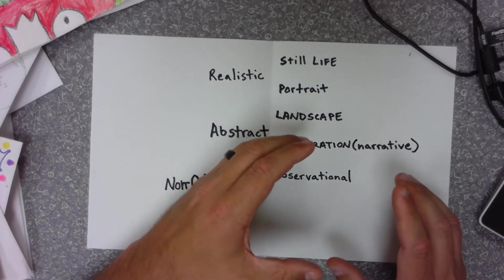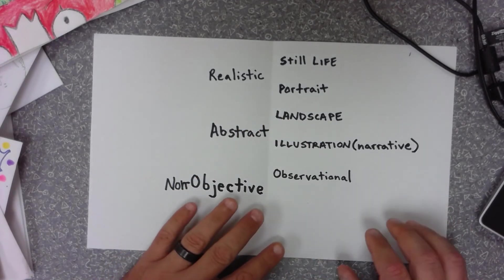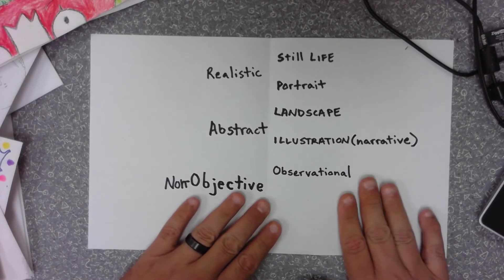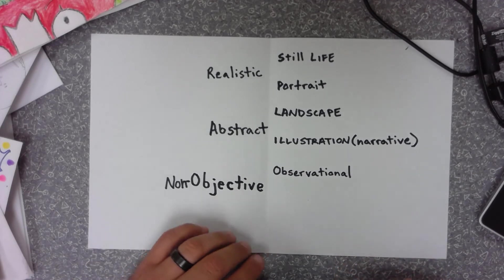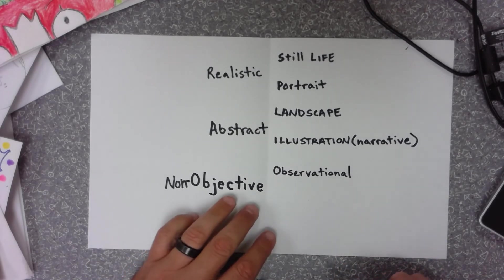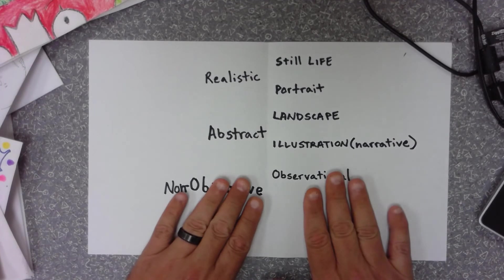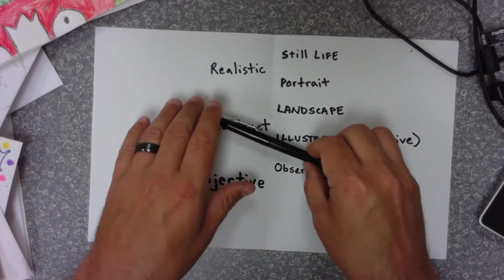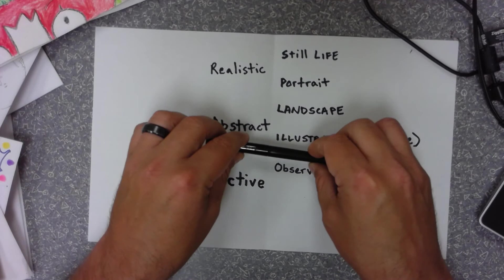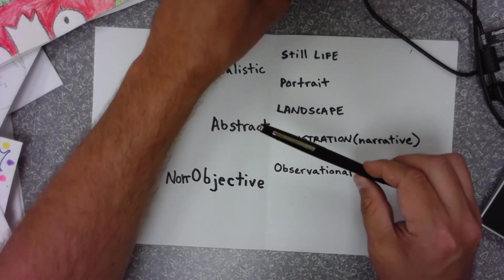Observational is when you look at something and draw it as you see it. So today our first assignment is we are going to do an observational drawing. I want you to find something in your own house that has a little bit of detail — I don't want something really simple like a plain pen. Pick something that has a little bit of detail.